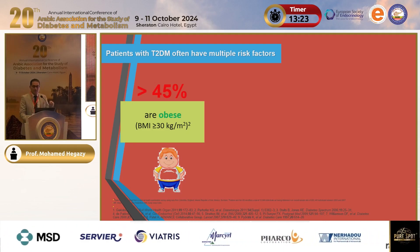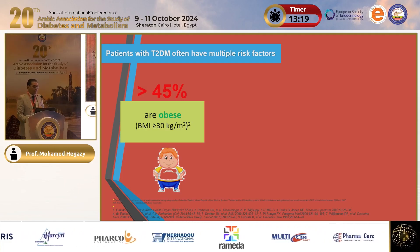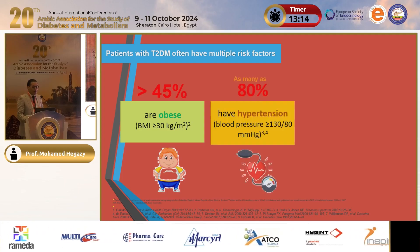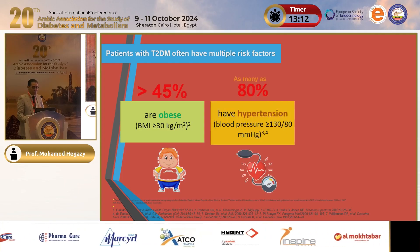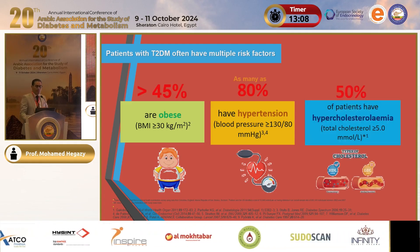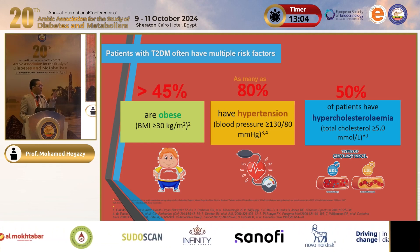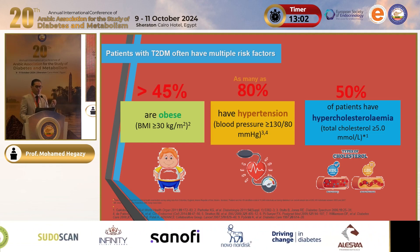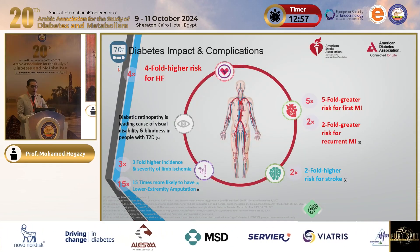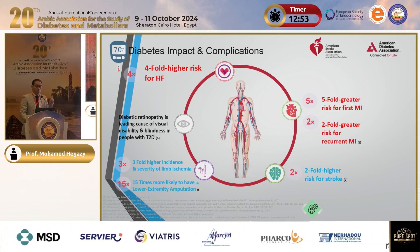Diabetes does not come alone. We discuss a lot about metabolic syndrome and the link between diabetes and other factors. About 40 to 45 percent of patients with diabetes have obesity, about 80 percent have hypertension, and about 50 percent have hypercholesterolemia. This highlights the link in the metabolic syndrome.